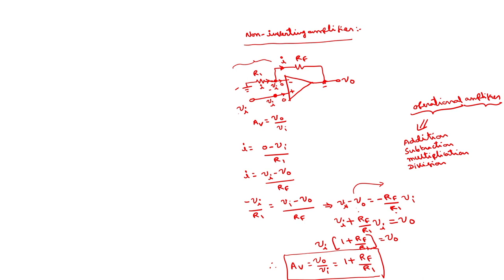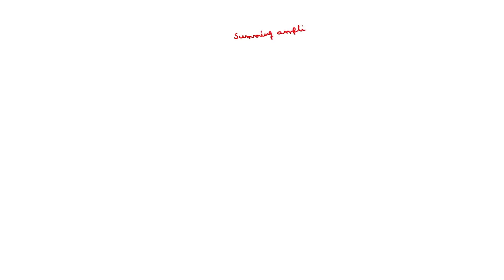Many arithmetic operations can be performed using this operational amplifier — that is why it is named 'operational amplifier.' In earlier days when digital technology was not invented, computers performed addition, subtraction, multiplication, and division by means of operational amplifiers. Old analog computers used these circuits. Now I will discuss how addition is performed using an operational amplifier. This circuit is called a summing amplifier — it performs sum operations and also provides amplification.